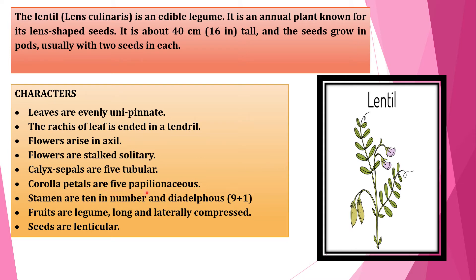Corolla petals are five and papilionaceous, which I have already discussed in the first chapter. Stamens are ten in number and diadelphous — diadelphous means nine plus one, so nine united and one is separate. Fruits are legume type, which has also been discussed in the previous slides. They are long and laterally compressed, as you can see the shape of the pods. Seeds are lenticular.